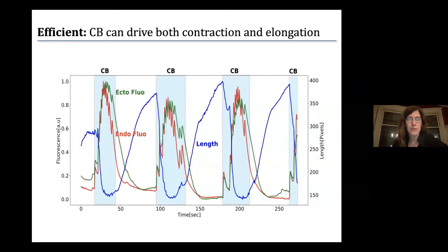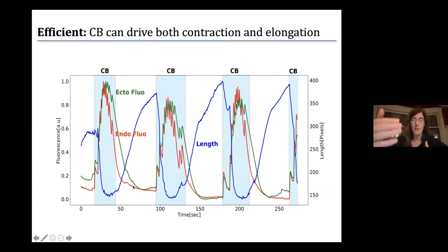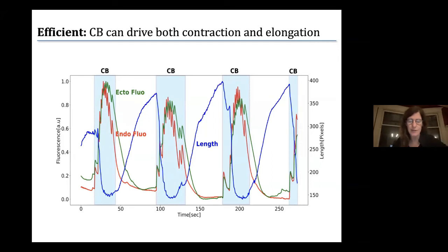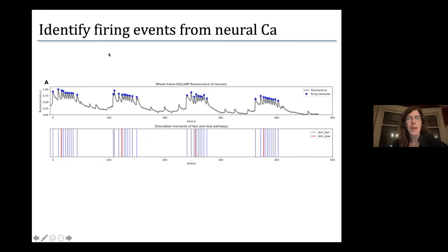This seems like quite a good idea: one bursting event in the ectoderm drives both contraction and elongation by making use of differential dynamics in the two muscle layers. You only need one neural event to drive the two sets of muscles, and even though they're firing together, they end up having an impact that is offset in time and carries out that full cycle — a kind of efficient way to use your neural signals to take advantage of muscle dynamics.